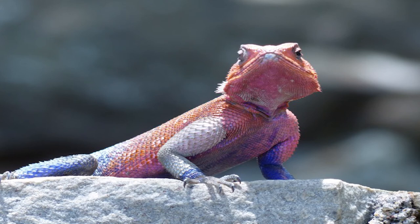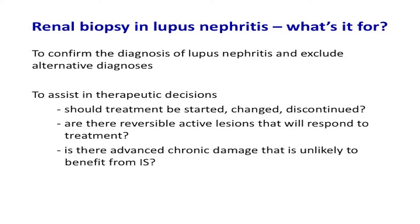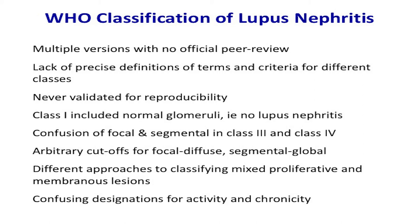That's the end of my first talk. I'm now going to go through the new classification of lupus nephritis — you will recognize common themes to what I've just discussed. In our patients with lupus, what is the classification for? Once we've reached the diagnosis of lupus nephritis and excluded other conditions, the histology is there to assist in therapeutic decisions — what treatment should I give my patient, and are there reversible lesions that could respond to treatment?